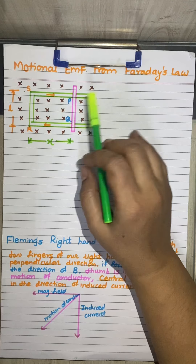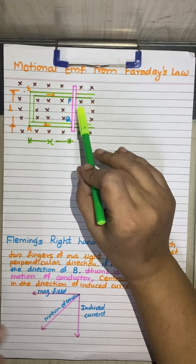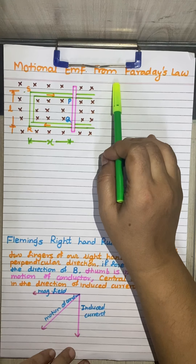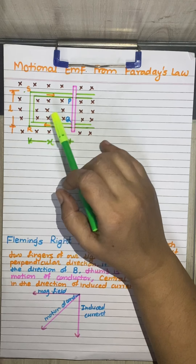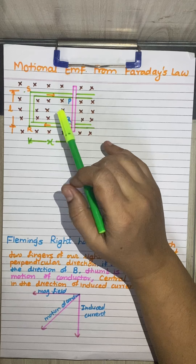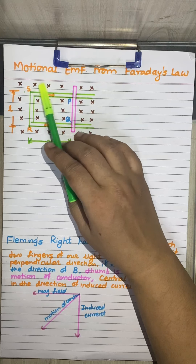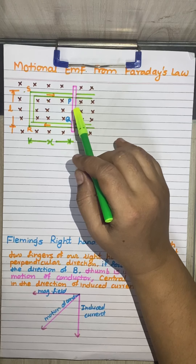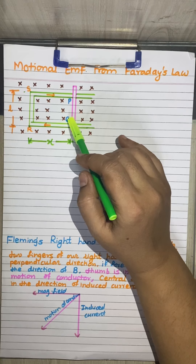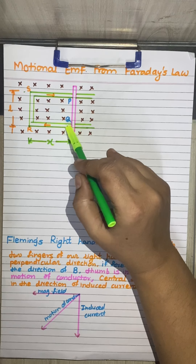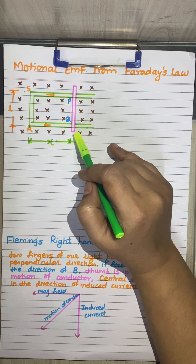There are two types of derivations by which we can find out Motional EMF. But first, let us understand it using Faraday's law. This diagram shows a magnetic field that is a cross field — a uniform magnetic field directed into the plane. We need to find the induced EMF by the change of the area of the coil linked with the magnetic field.